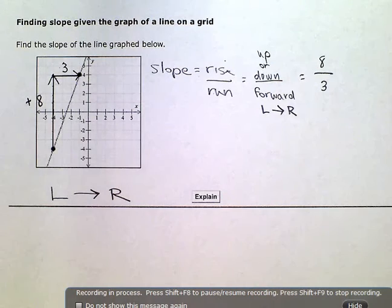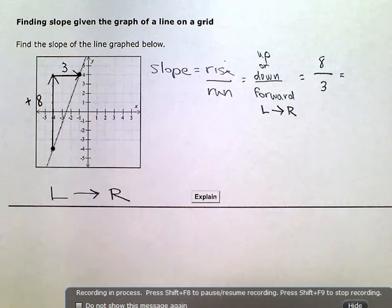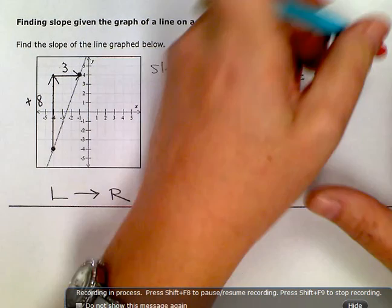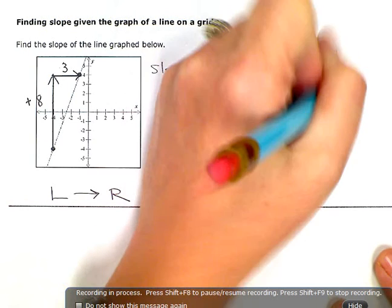And I can just leave this improper. It doesn't reduce because three doesn't go into eight evenly. So I can leave eight-thirds as my final answer.